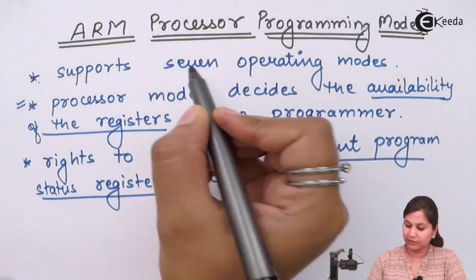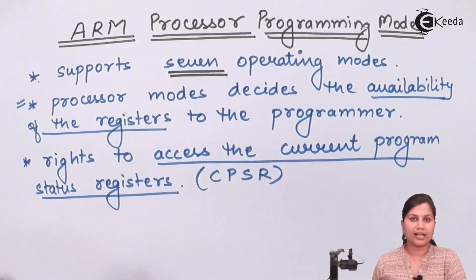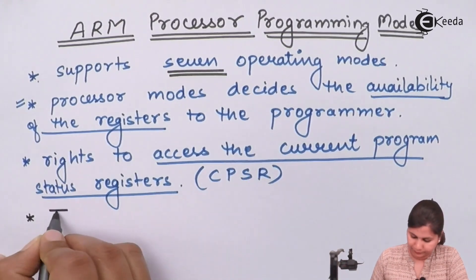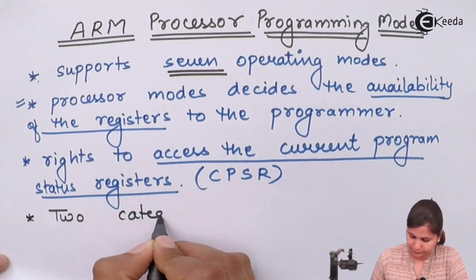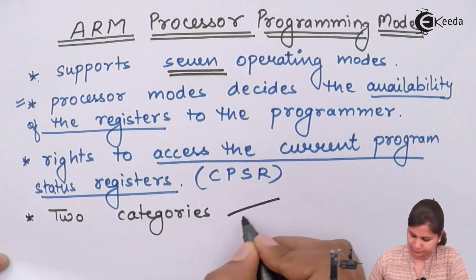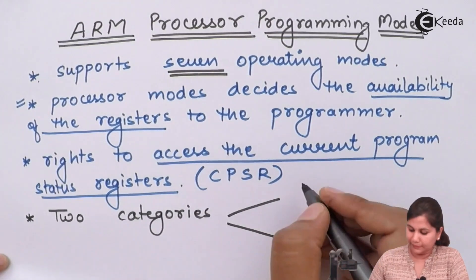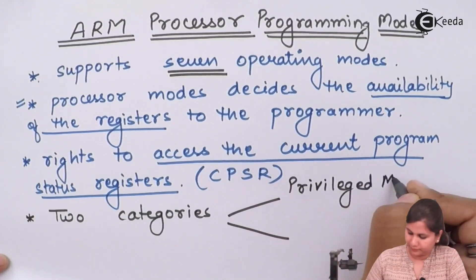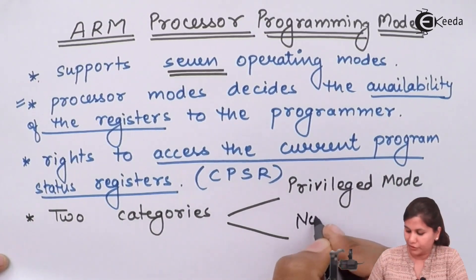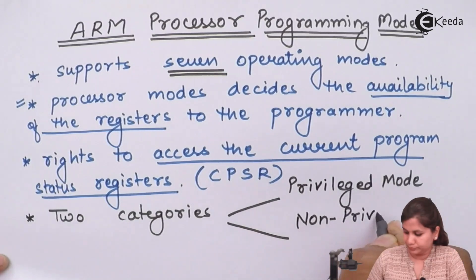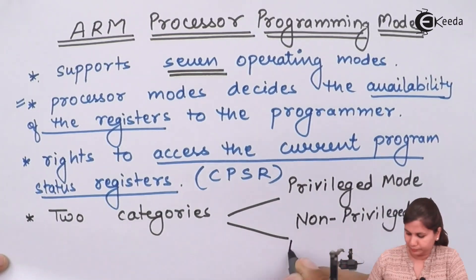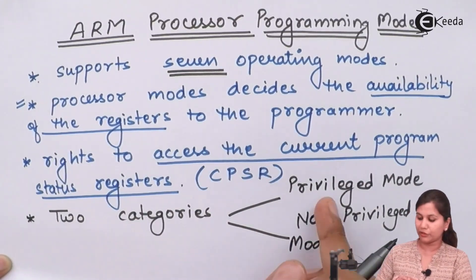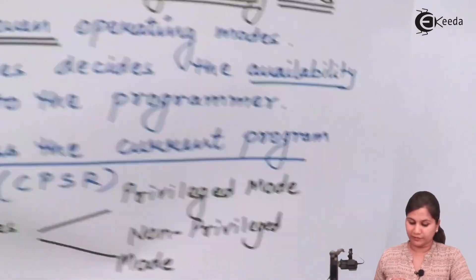The seven operating modes of the ARM processor are classified into two categories: privileged modes and non-privileged modes. So all seven operating modes fall into one of these two categories.